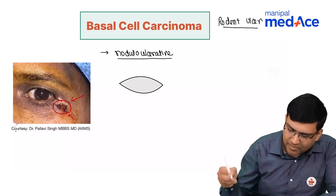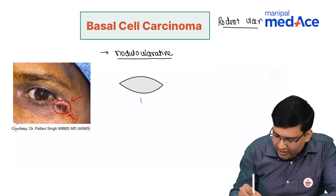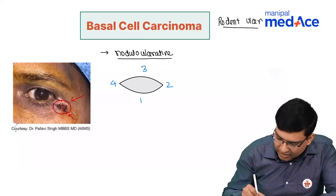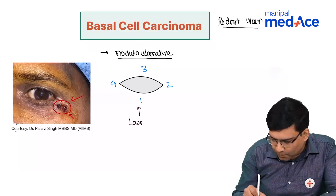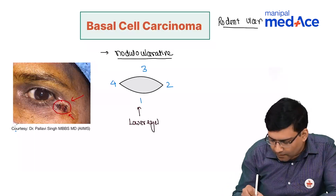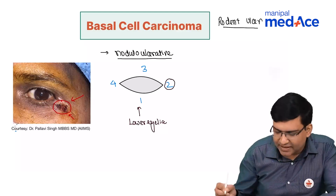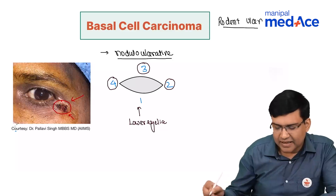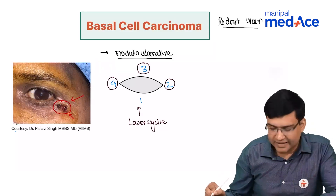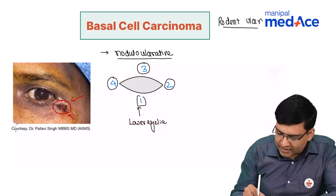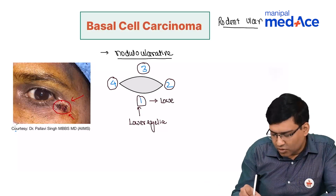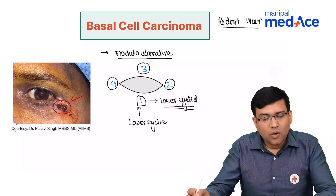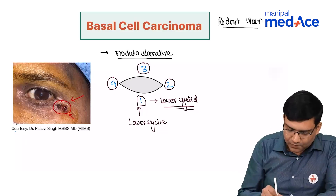The most common site can be remembered with a diagram numbered one to four. Most commonly it is seen in the lower eyelid, secondly in the medial canthus region, then the superior eyelid, and last is the lateral canthus. The most common site is the lower eyelid.